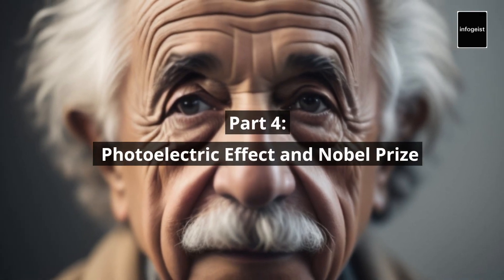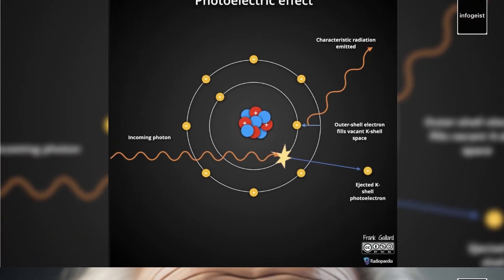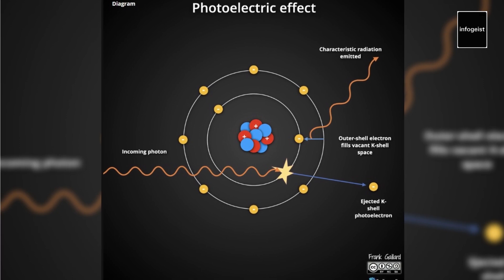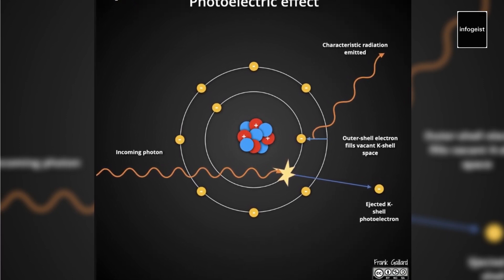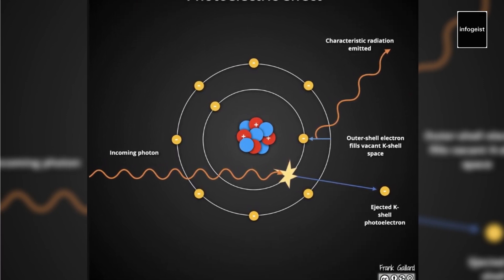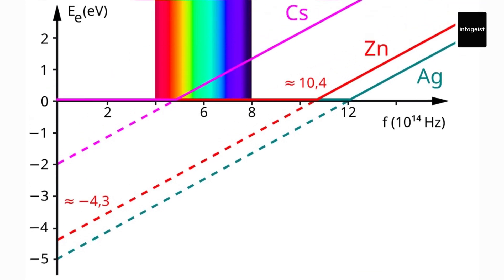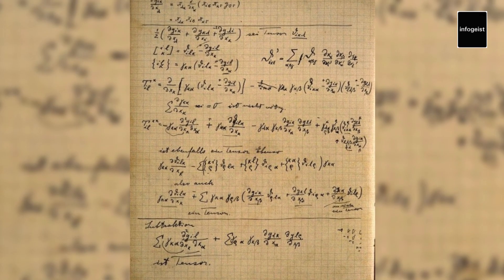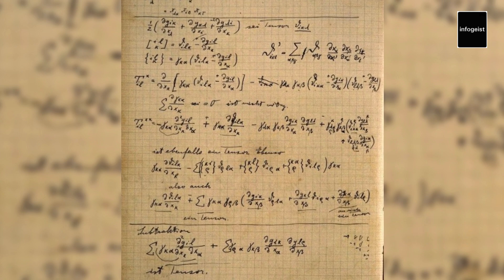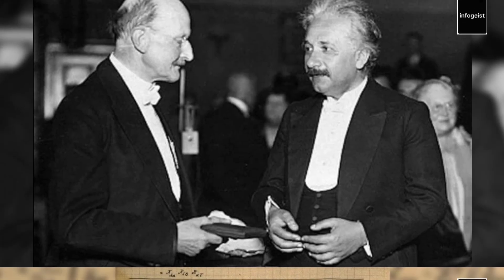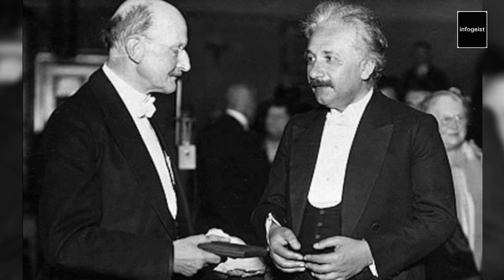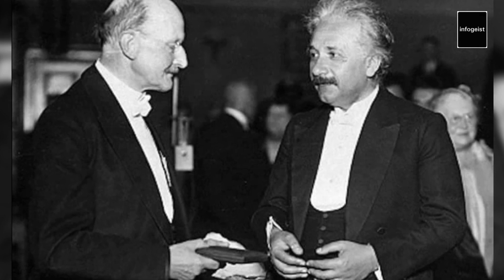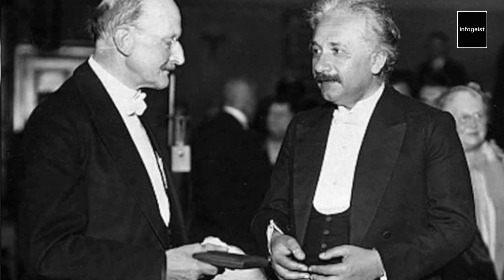Part 4: Photoelectric Effect and Nobel Prize. In addition to his work on relativity, Einstein made significant contributions to the understanding of the photoelectric effect. His explanation of this phenomenon provided crucial insights into quantum mechanics and the nature of light. For his groundbreaking work on the photoelectric effect, Albert Einstein was awarded the Nobel Prize in Physics in 1921, a well-deserved recognition of his contributions to the field of quantum mechanics.